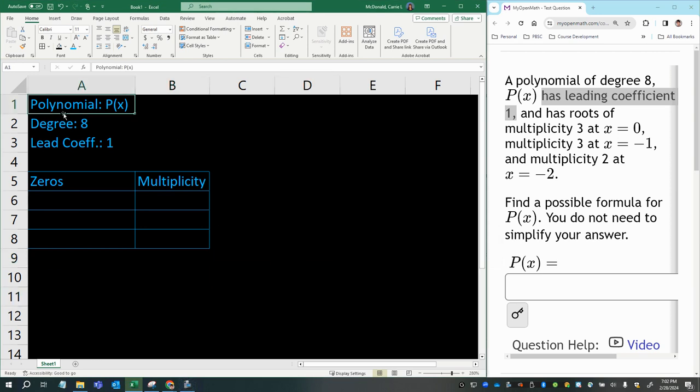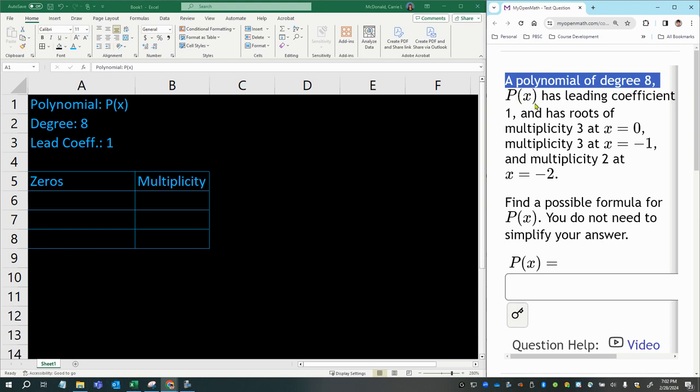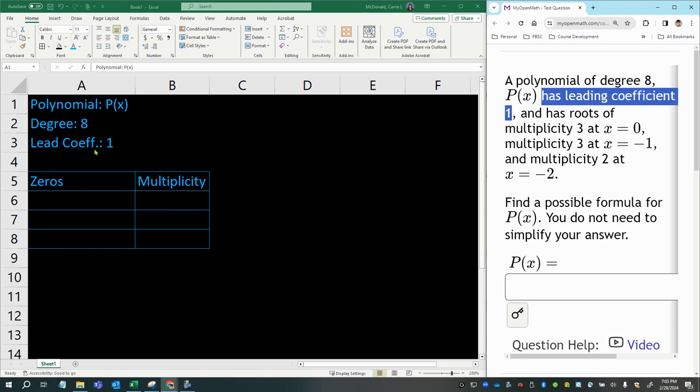In this problem, we're asked to find a polynomial called P(x), a polynomial called P(x) with degree 8. P(x) is its name. This is just function notation to replace the y variable in an equation with two variables. It has a leading coefficient of 1, and then it also has roots.